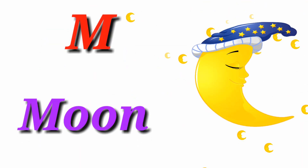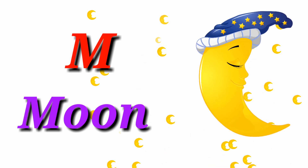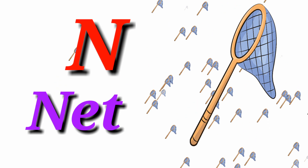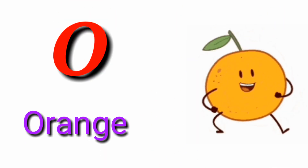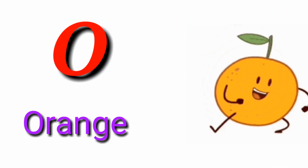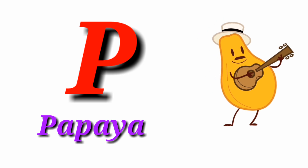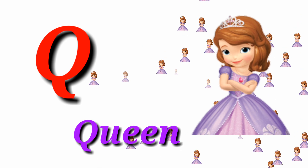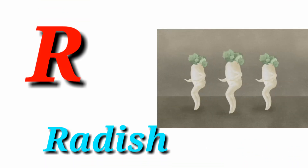M for moon, N for net, O for orange, B for papaya, U for queen, R for reddish, S for sunflower.